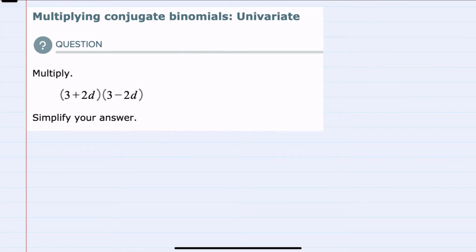We can see that we're asked to multiply two conjugates because while these two expressions are almost identical, there's only one difference in that one of them is addition and the other is subtraction. This means that we can use a shortcut in the FOIL process.